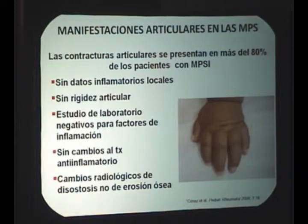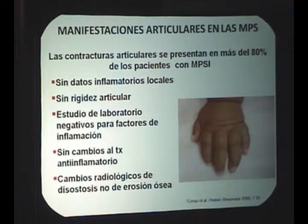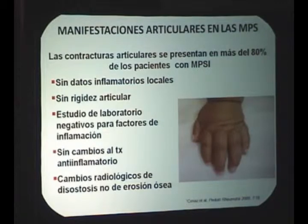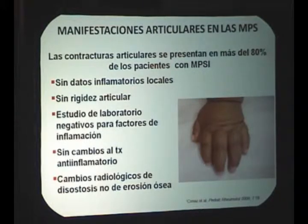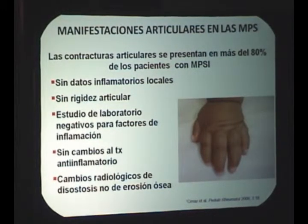Un punto importante es que muchas veces se tiene la duda de si el paciente tiene artritis idiopática, se le da tratamiento, se hacen estudios y resulta que no evoluciona como una artritis. Hay un artículo clásico que analiza 13 pacientes con Scheie donde se describe cómo durante infancia y adolescencia pasaron por muchos especialistas sin diagnóstico, llegaron a la adultez en condiciones terribles, hasta que alguien pensó en enfermedades lisosomales. Nuestros pacientes no deben llegar a la adultez sin tratamiento por desconocimiento médico.